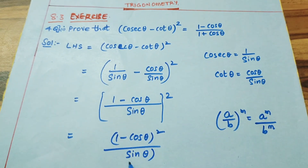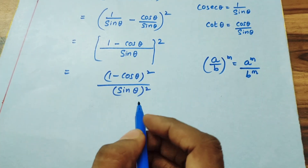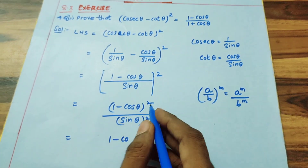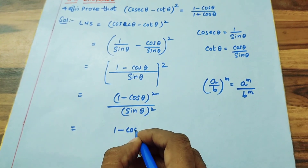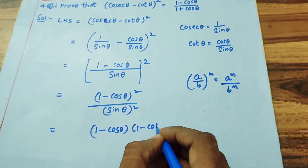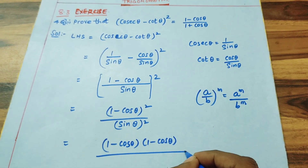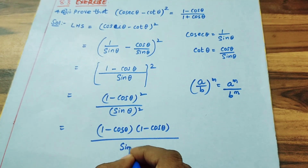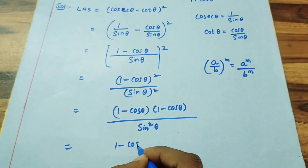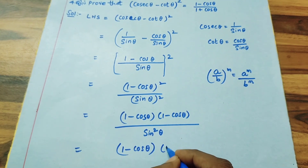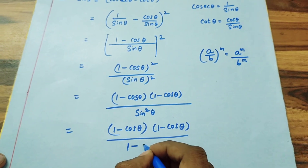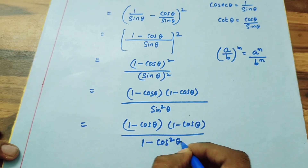This is nothing but (1 − cos θ)² / sin²θ. I'm writing (1 − cos θ)² as (1 − cos θ)(1 − cos θ), divided by sin²θ. Now sin²θ is nothing but 1 − cos²θ.